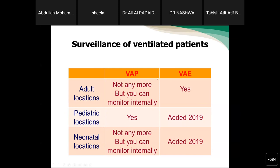Comparing VAP and VAE in adult locations: we are no longer doing VAP, but you can monitor it internally if your administration wants. What is required is VAE in adult locations. In pediatric locations, you can do VAP, but pediatric VAE was added in 2019 in NHSN. In neonatal locations, VAP is no longer required but can be monitored internally; it was also added in 2019 in NHSN, and we have recently added it to our surveillance too.